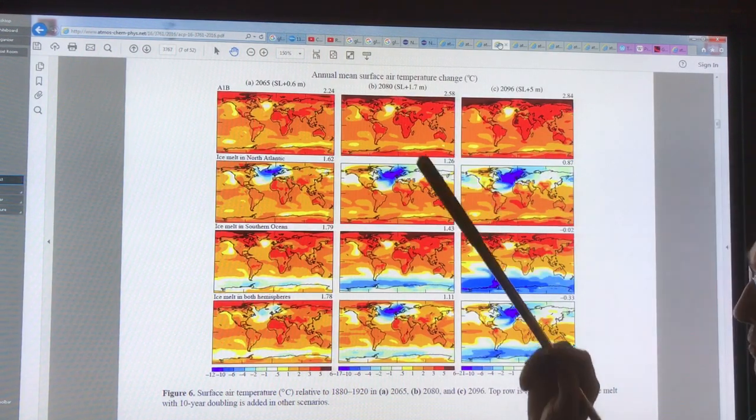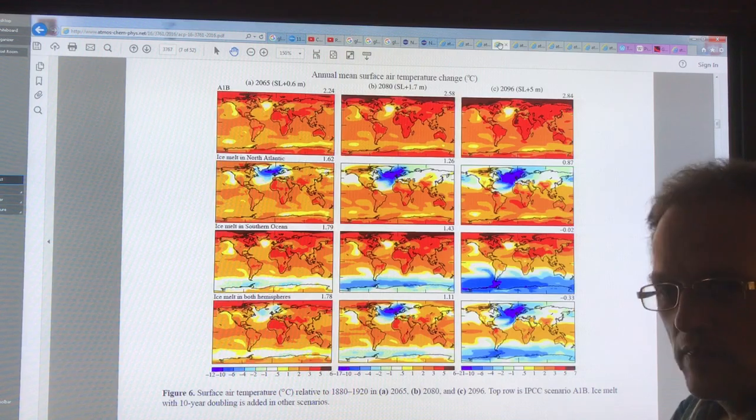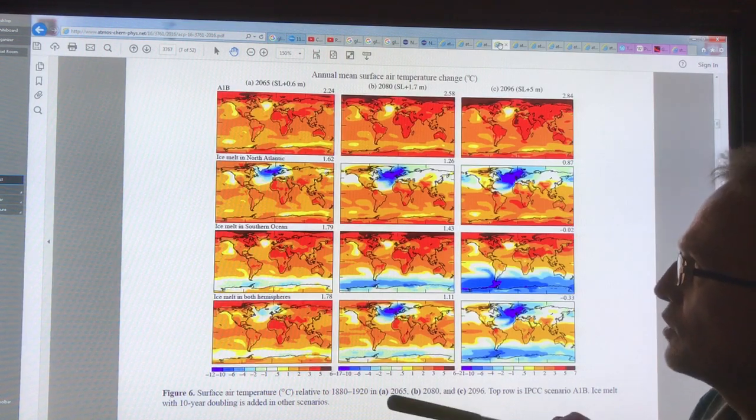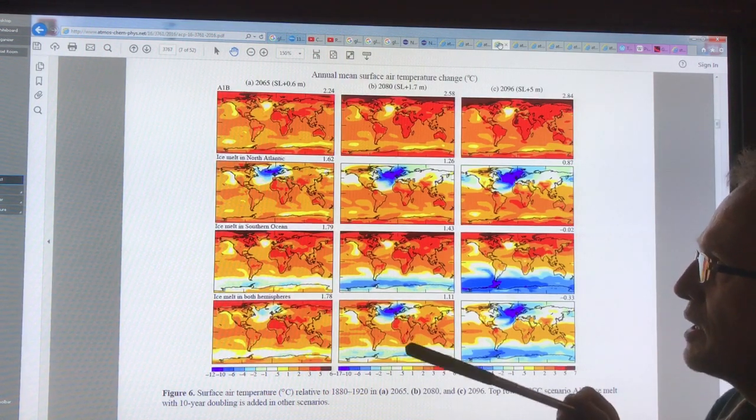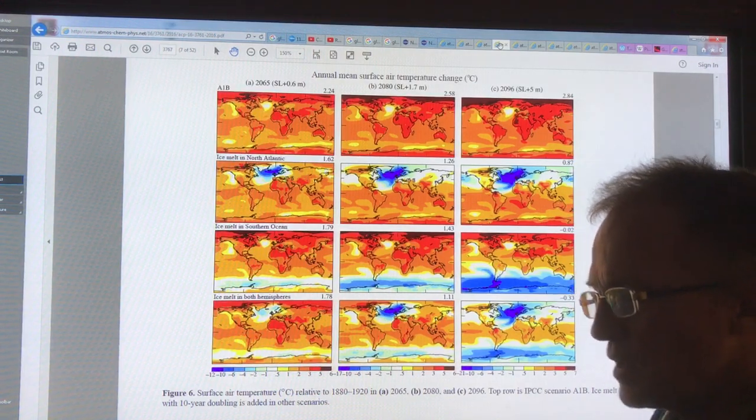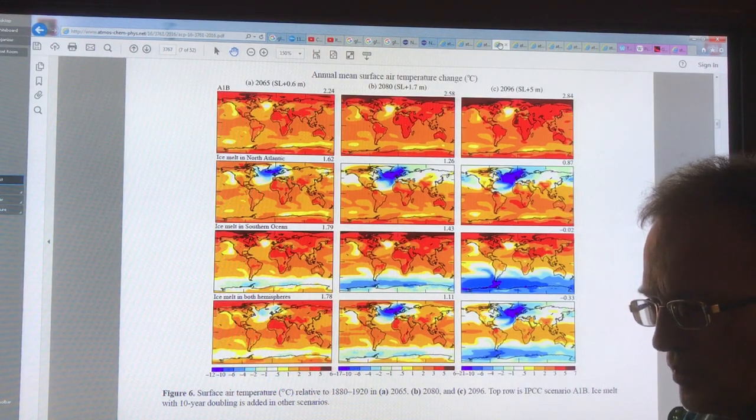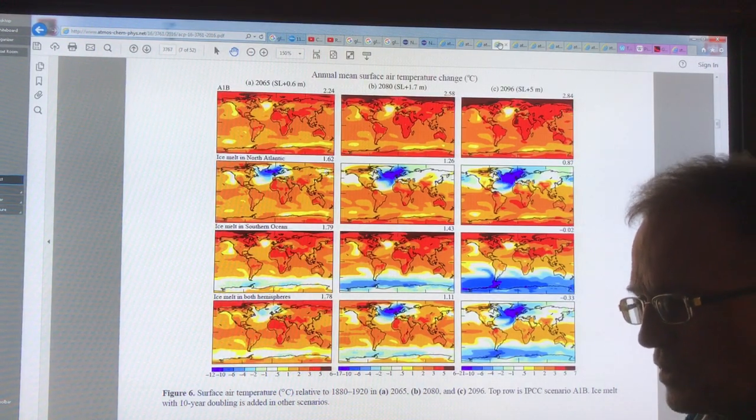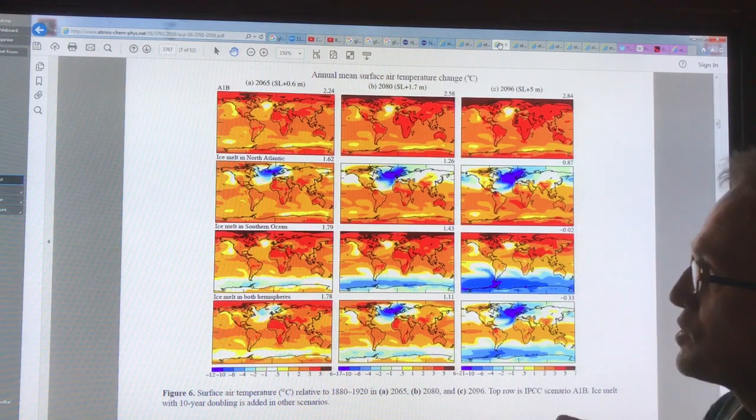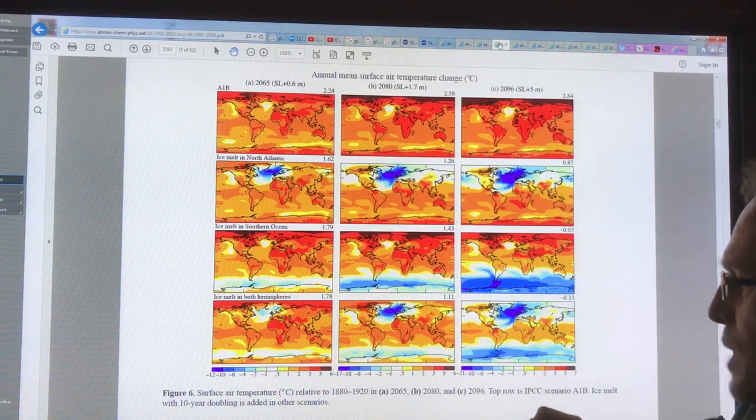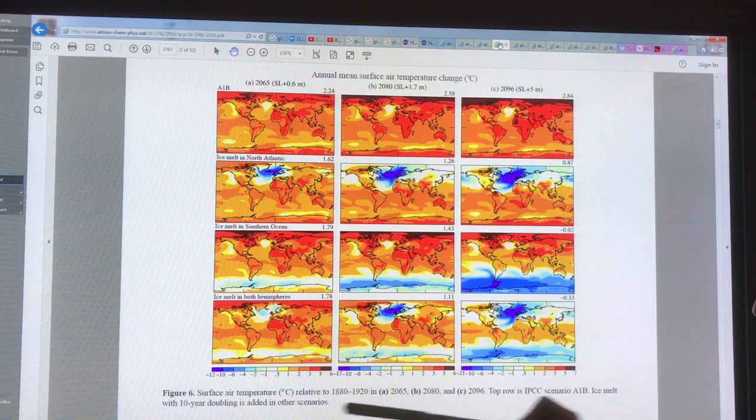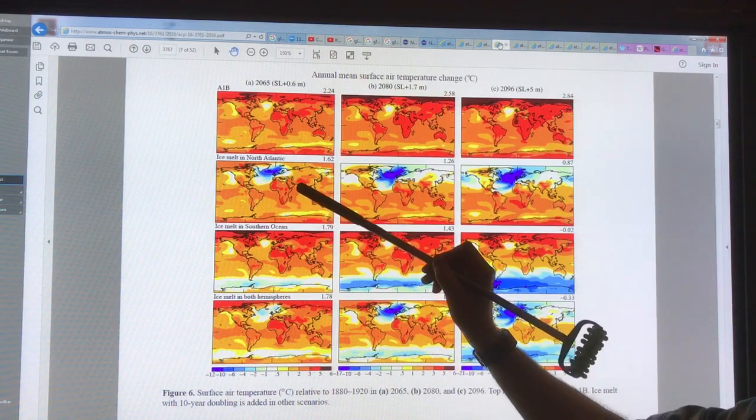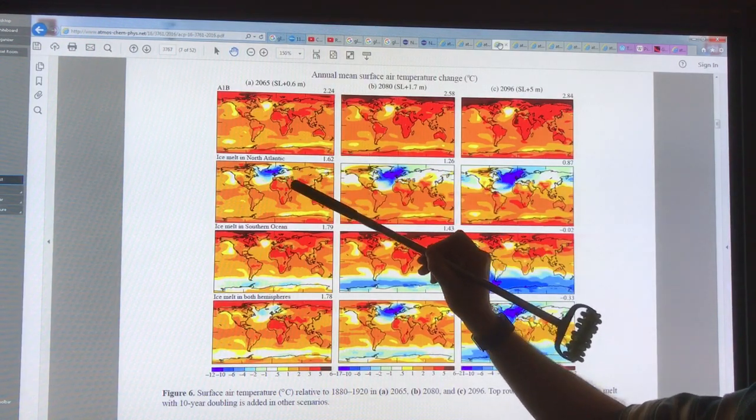Now this does not take into account how the melting of the ice, putting cold water into the oceans, affects these global temperatures. So if we assume a 10 year doubling period for ice melt from Greenland, that's shown here and added into the data.